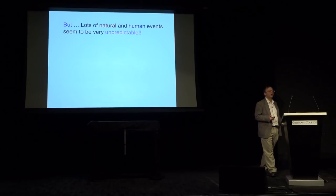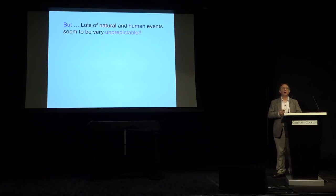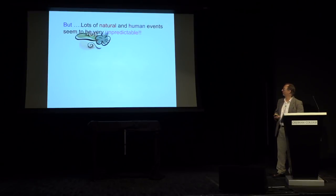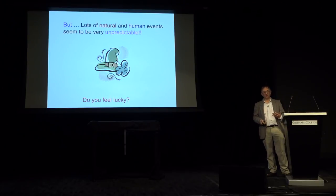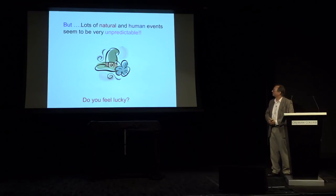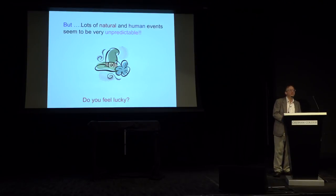So, that's Laplace's Demon. Do we believe that this is true? It seems to be true to a certain extent. We certainly use this approach to predict what galaxies are going to look like, what the solar system does. But does it apply in general? And I would say, quite strongly, it doesn't. If it did, life would look very different from the way it does. Lots of natural and human events don't seem to be predictable, they actually seem to be unpredictable. We have a phrase for this. We say, do you feel lucky? If I toss a coin, is it going to come down heads or tails? I don't know.